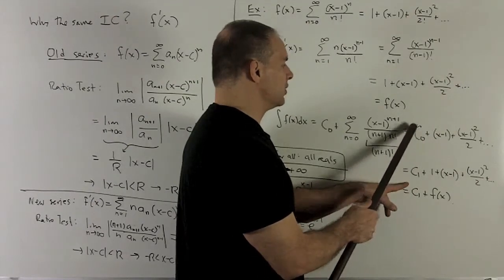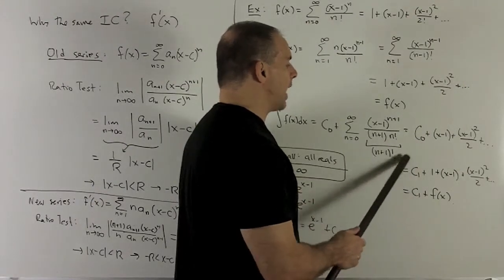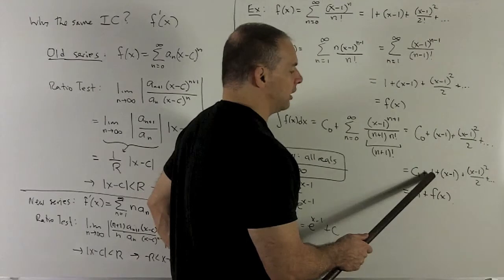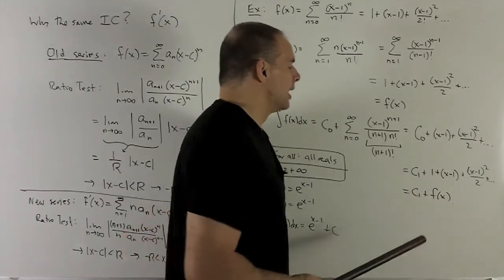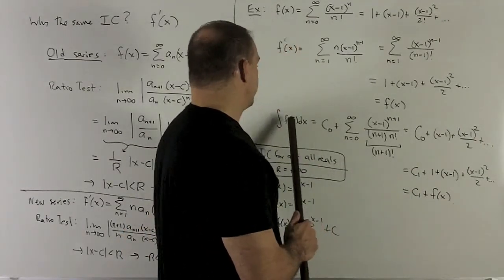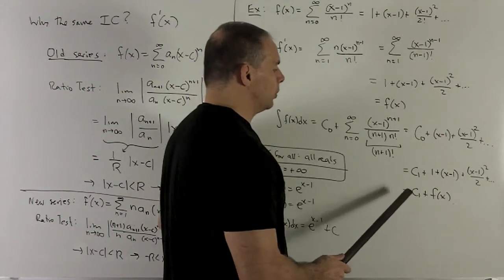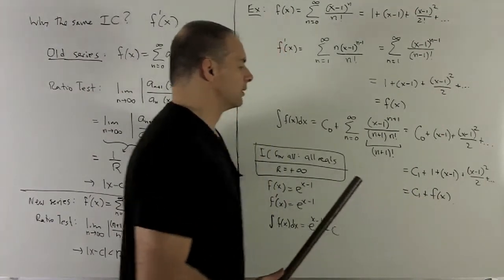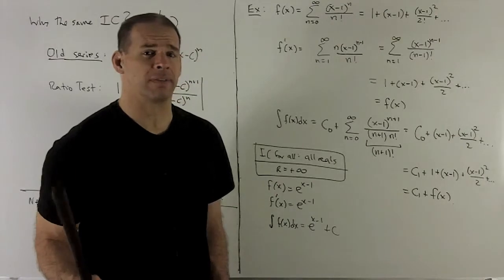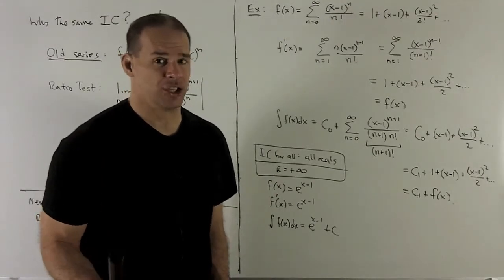So I'm going to borrow a 1 from the c_1. So we're going to subtract the 1 off of c_0. The constant doesn't really matter yet, so that 1 can hang out here if we like. Now I've got the antiderivative of f(x)dx is going to be equal to c_1 + f(x).